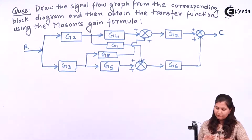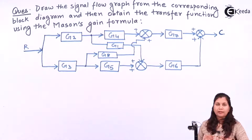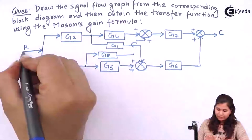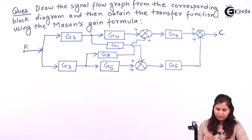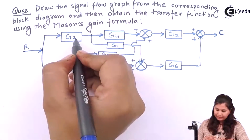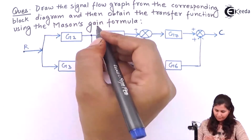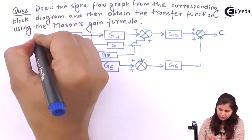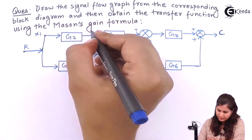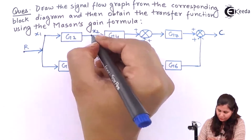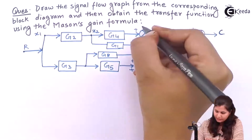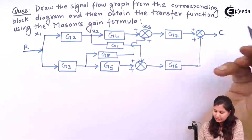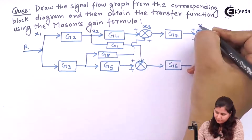First we will mark or make the node for each of the variables in the system, including the summing points and the takeoff points. This is the input node, so it will be our node. Then we have this takeoff point, which is the point dividing this signal, so it will also be named as a node — x1. The takeoff point will be taken as another node, x2. This is a summing point, so another node x3. Then we have x4.